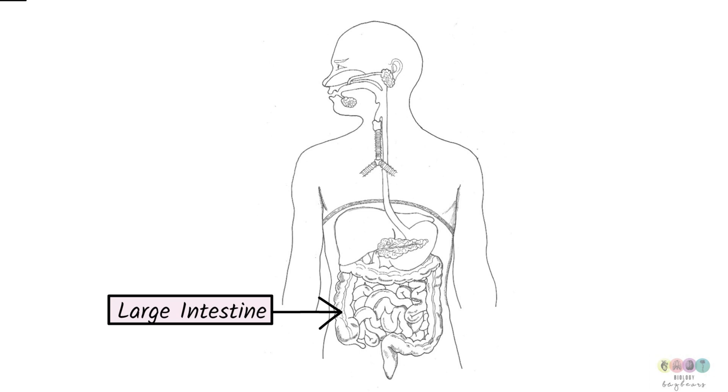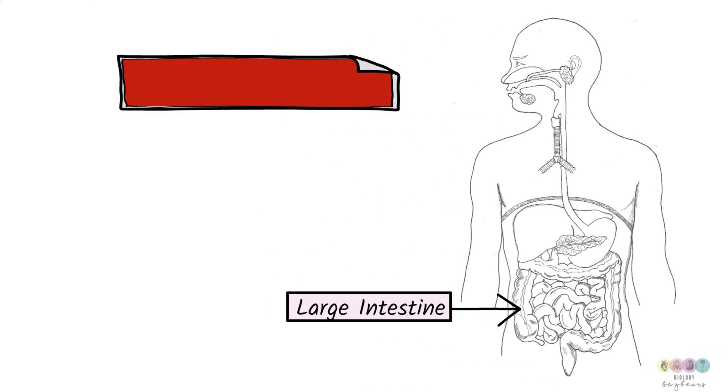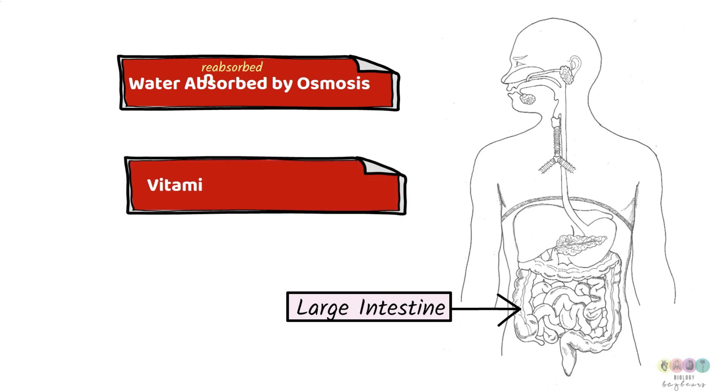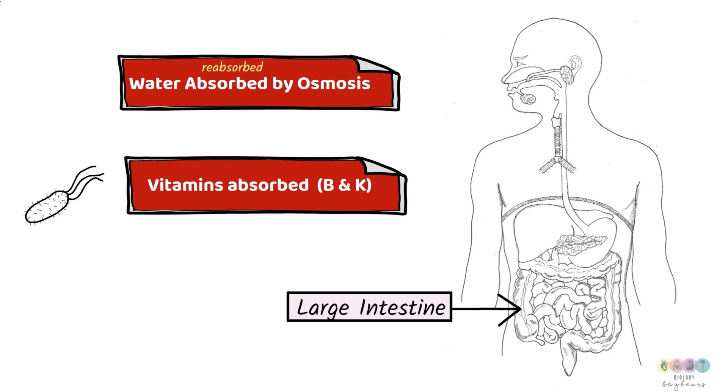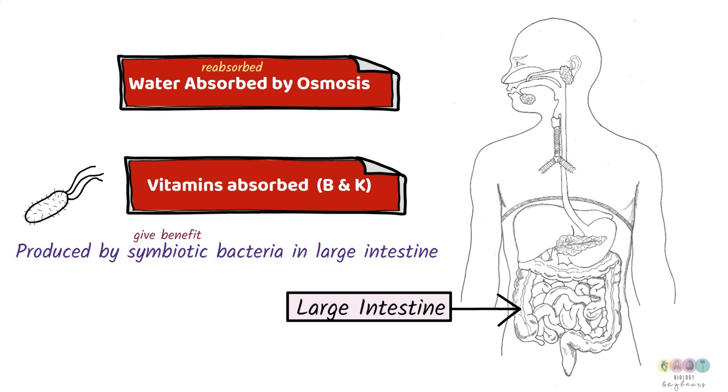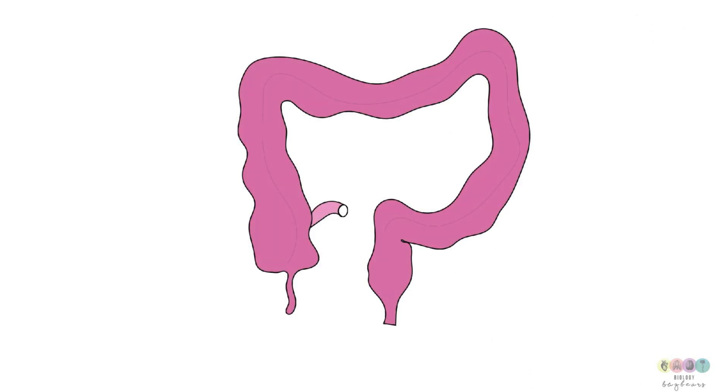Material which has not been digested or absorbed passes into the large intestine. And it's in the large intestine where water is absorbed by osmosis. That's a really key function. And in fact, lots of people would say the water is reabsorbed because the water came mostly from secretions as part of the digestive process. Vitamins are also absorbed, vitamins B and K. And these are produced by symbiotic bacteria in the large intestine. Symbiotic means they give benefit.